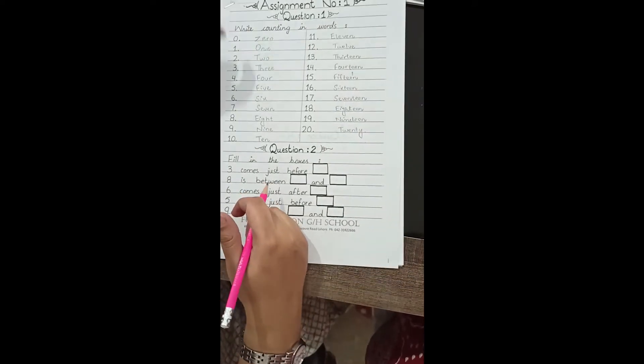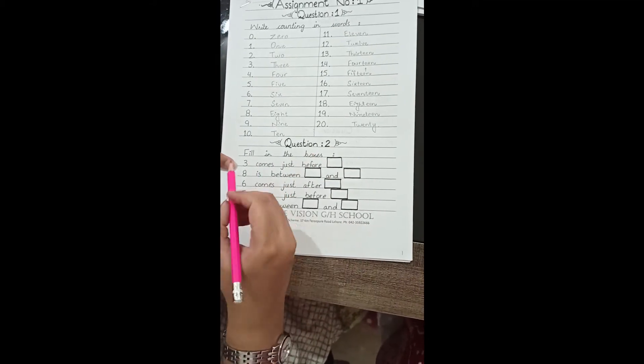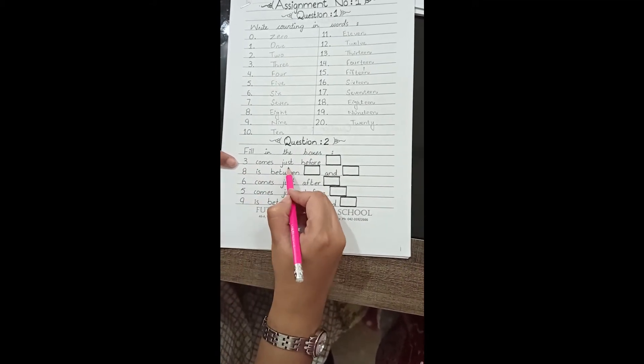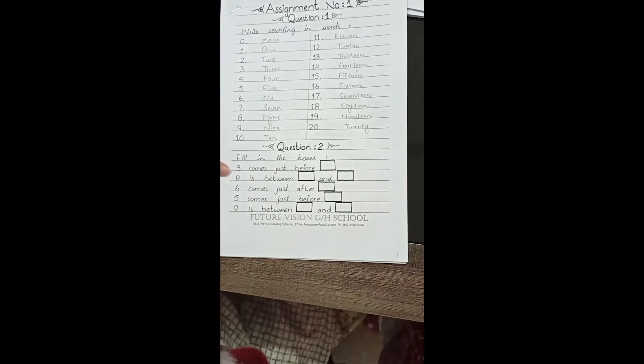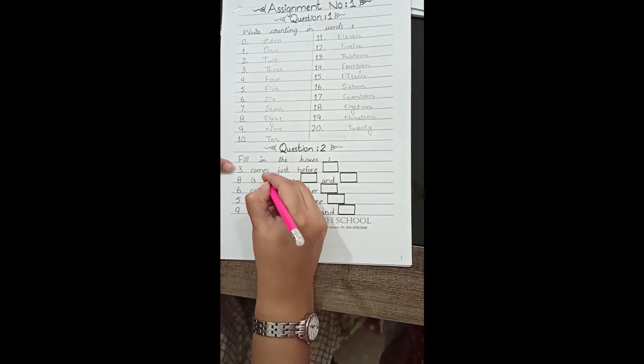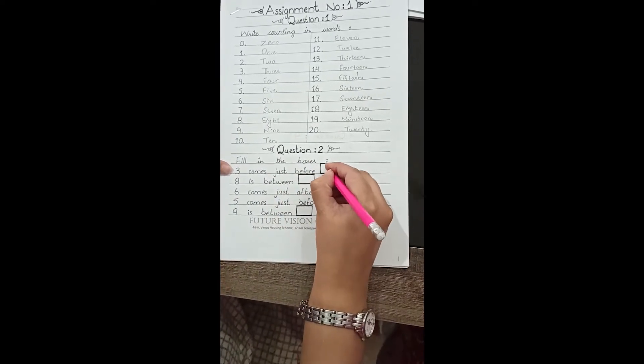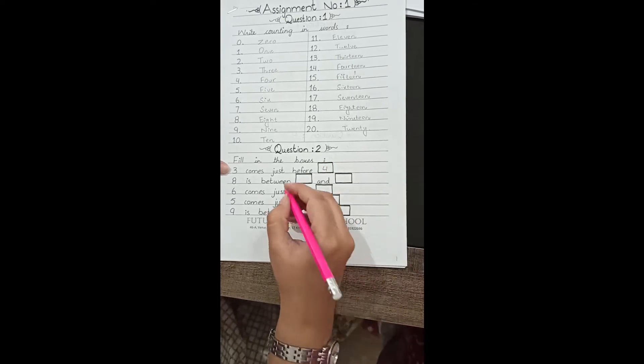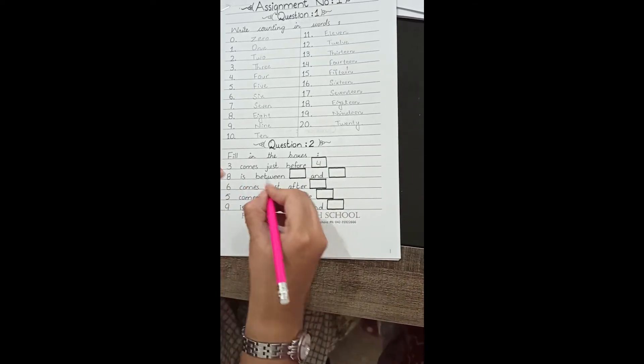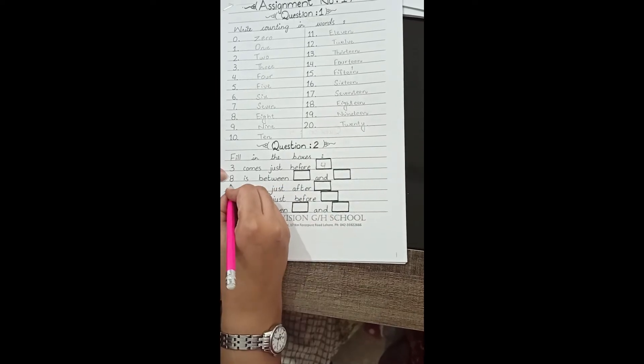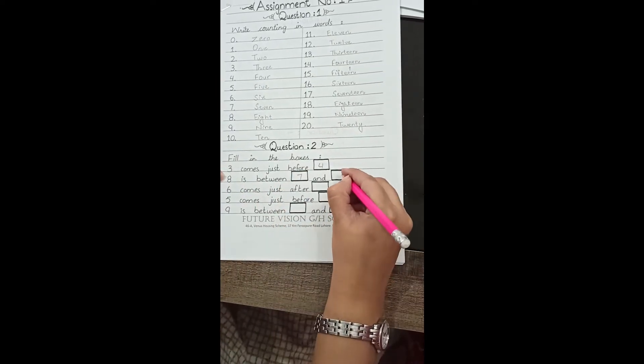Now moving toward question number 2: fill in the boxes. Students, 3 comes just before what? 3 comes just before 4. 8 is between what? 8 is between 7 and 9.